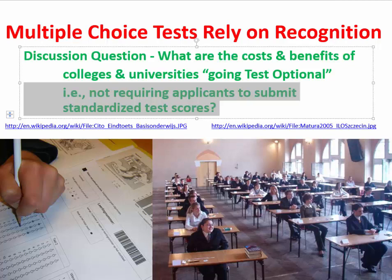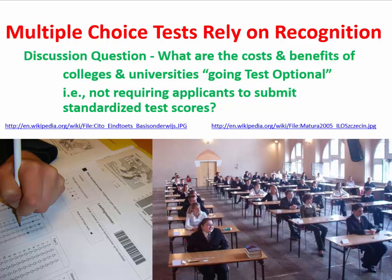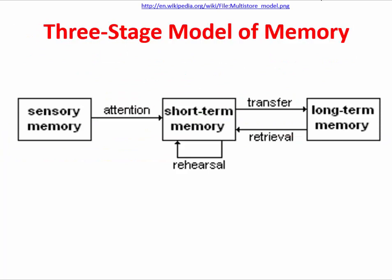Having summarized these three major processes — encoding or acquisition, storage, and retrieval — let's go on to understand the so-called three-stage model of memory. This has a sensory memory component, followed by a short-term memory component, and then lastly a long-term memory component.